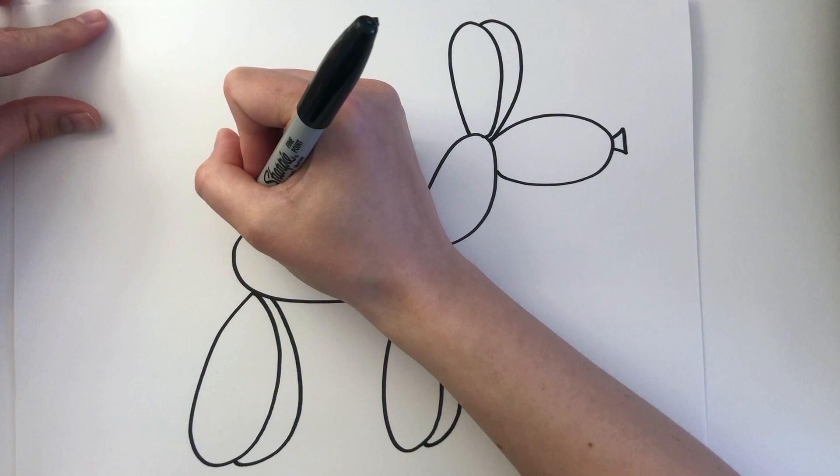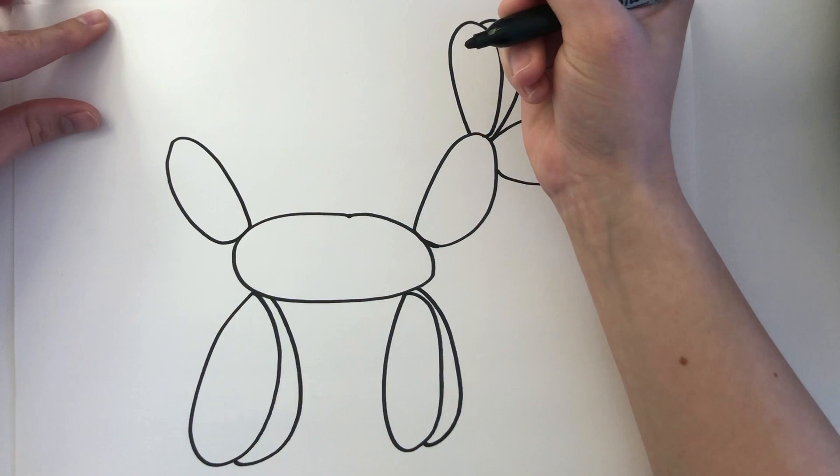Really, the key to this is drawing the oval shapes to keep it looking like a balloon. For the tail, we're going to make it look like we didn't blow up the balloon all the way, so add a really tiny oval up at the top.